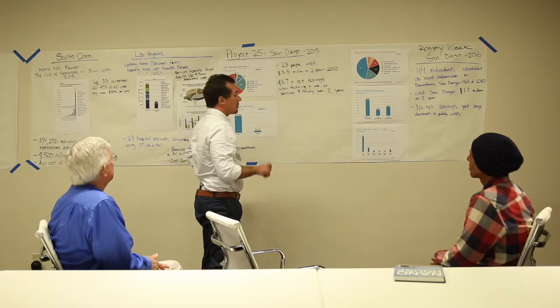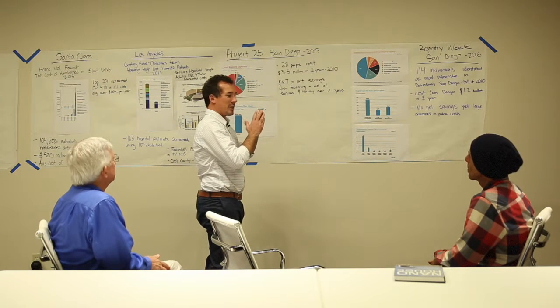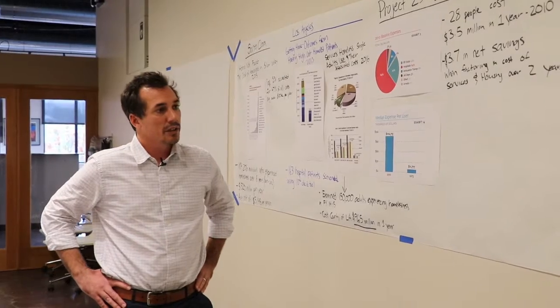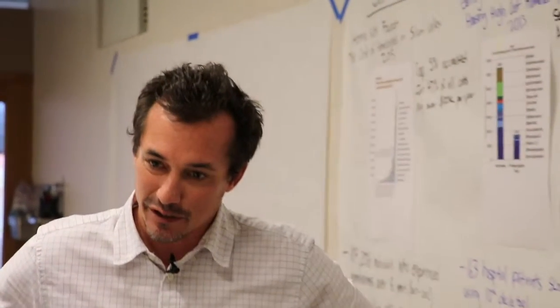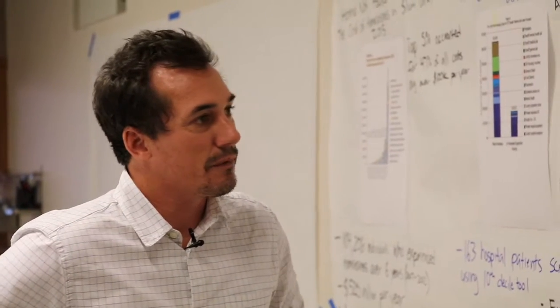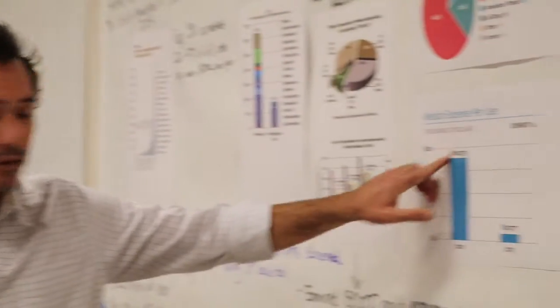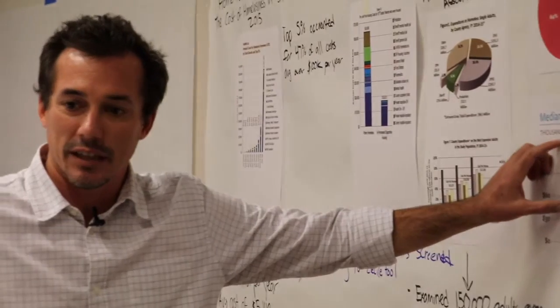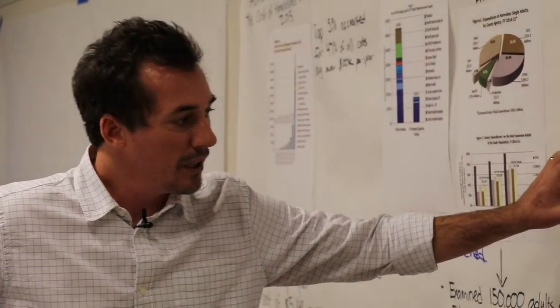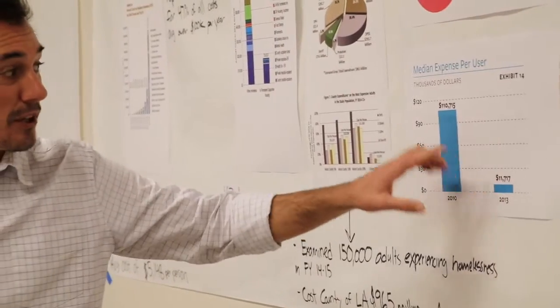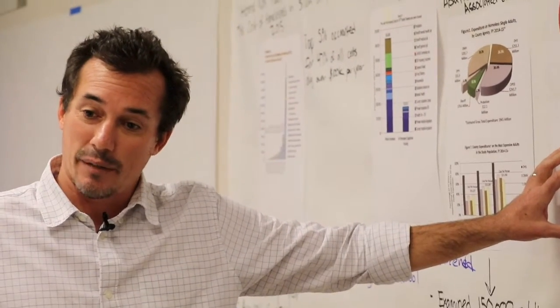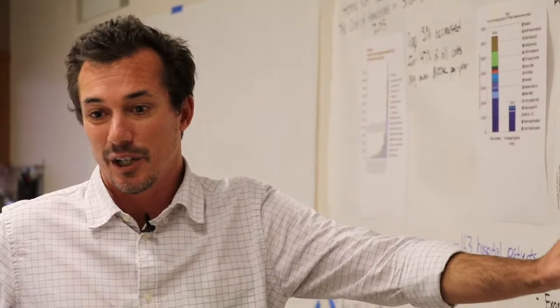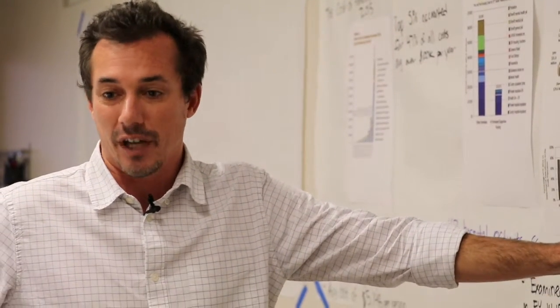So Project 25, those 28 people, those were like the tip of the pyramid as far as expensive people on the streets. For me, what Project 25 really did was, I drank the Kool-Aid for Housing First, and I saw that if a program could target these people, folks that most folks would say they can't be helped, nothing's going to work for this group, and we can get their costs down to here. And I was part of this project, and I saw people that I saw back in 2011 say, there's no way we're going to make an impact with this guy. And to see this guy in his apartment three years later, inviting me in for ice cream was pretty phenomenal.